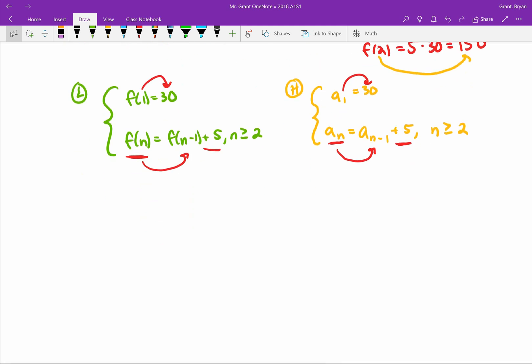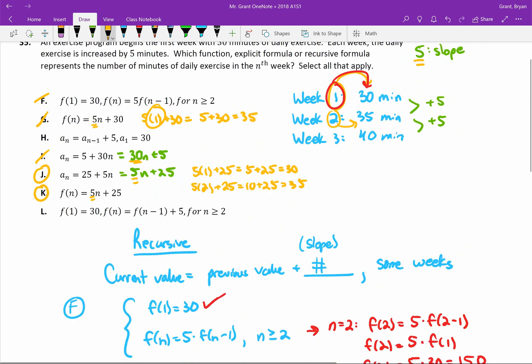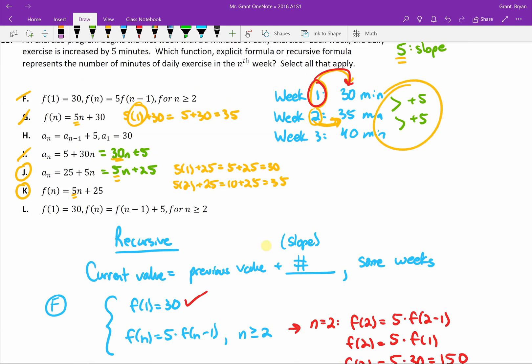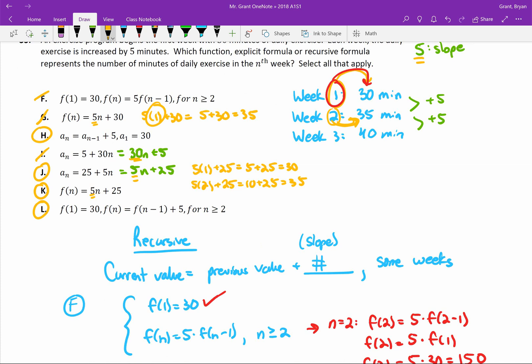If one of these works, the other one works. I'll just work with the orange one, H, because we haven't done much with that yet. Let's try this for 2. If I want to see N = 2, then this is going to find me the amount of exercise that we did in the second week, A sub 2. That's going to be A sub 2-1 + 5. A sub 2-1, well 2-1 is 1, so A sub 1 + 5. A sub 1 is 30, so we end up with 30 + 5, and A sub 2 ends up being 35. Does that match? In our second week, do we do 35 minutes of exercise? We did. This plus 5 in our recursive is just like our slope. It's like we're adding 5 every week. So it turns out that H and L also both work, and you should be set.